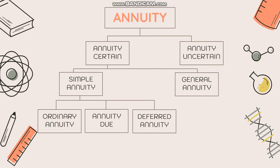Annuity certain is further divided into two types: simple annuity and general annuity. Under simple annuity, we have ordinary annuity, annuity due, and deferred annuity. We will be focusing on the first two.